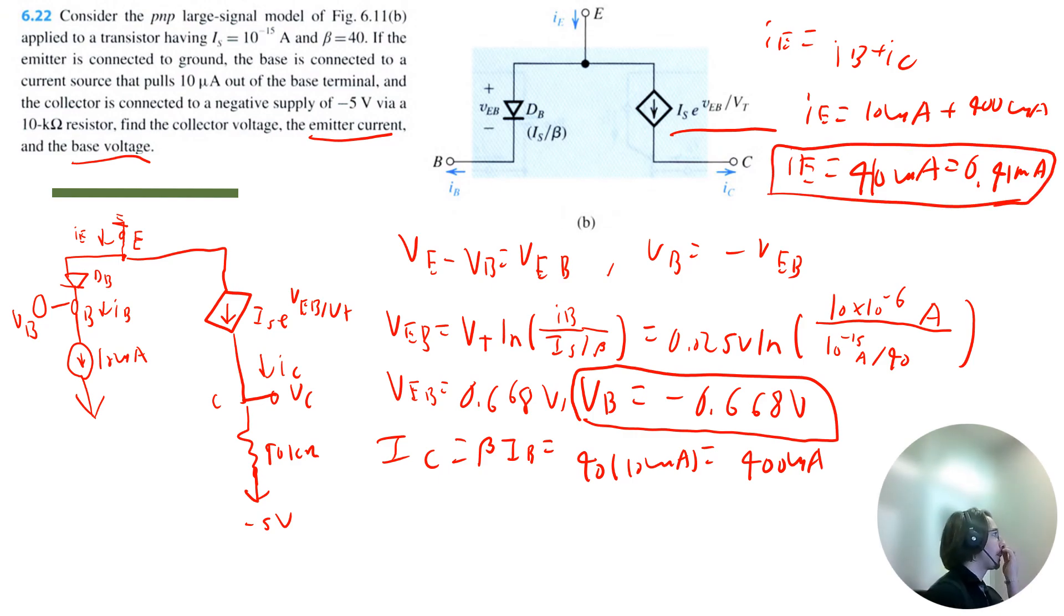Lastly, we need to solve for the collector voltage, VC. And if we travel out from the circuit, that would be negative 5 volts plus the collector current multiplied by 10 kilo ohms. So that's equal to negative 5 plus 0.4 milliamps times 10 kilo ohms. So that would be negative 5 plus 4. So that's negative 1 volt. The collector voltage is equal to negative 1 volt.